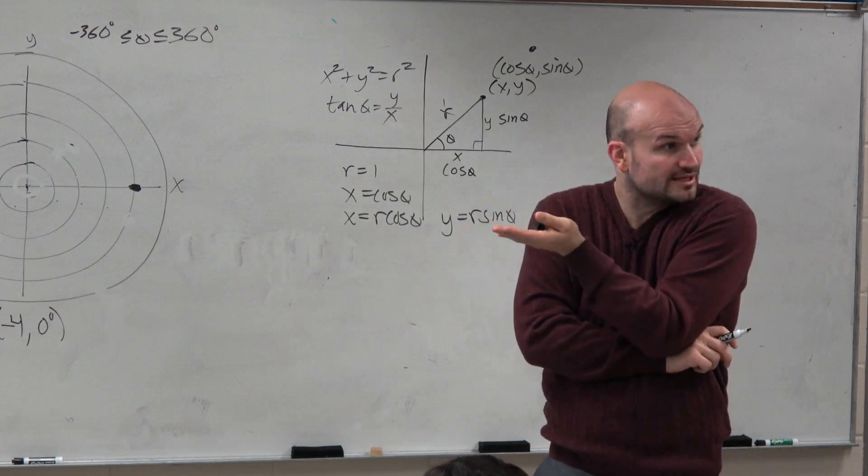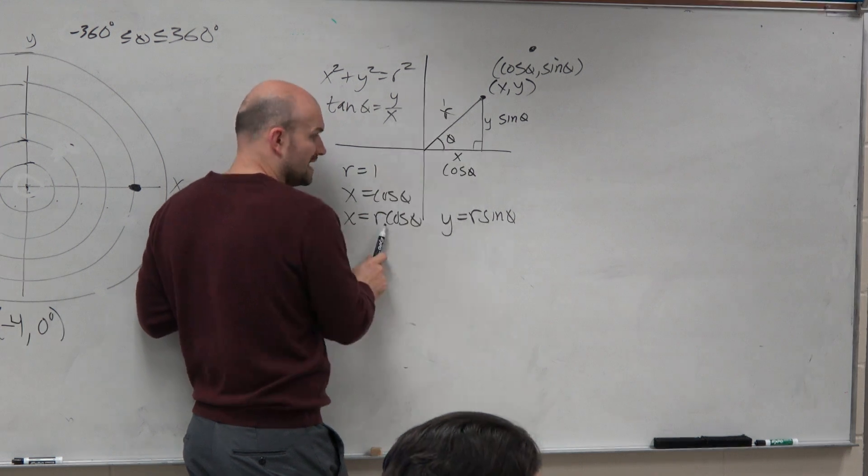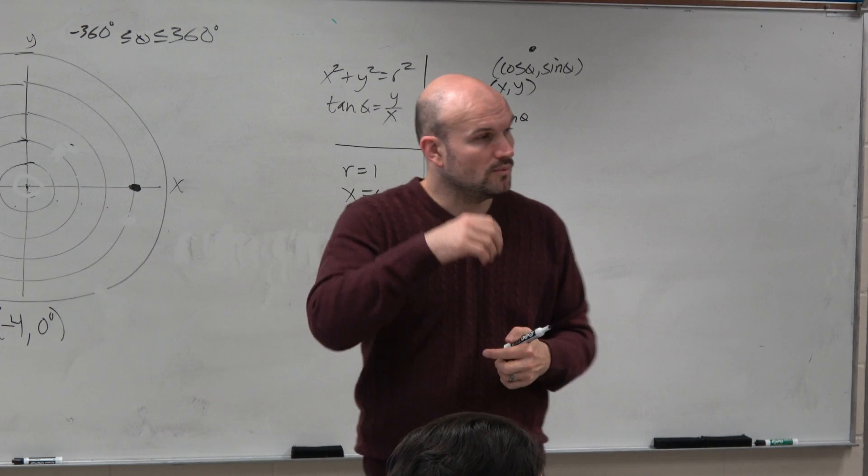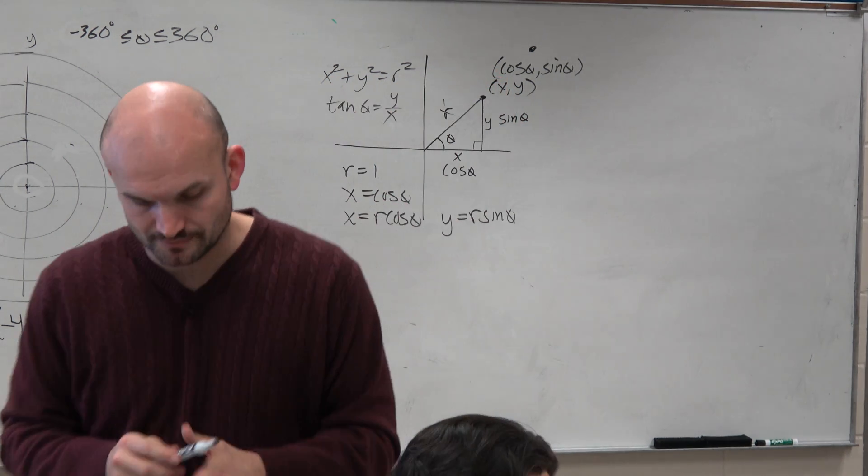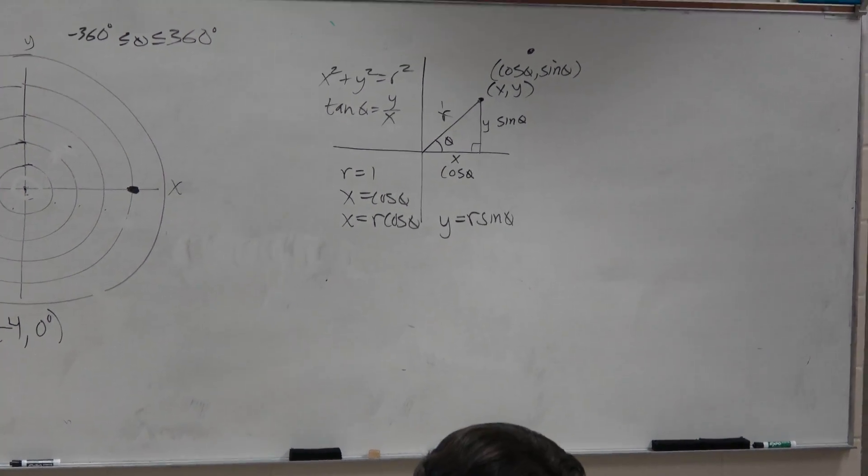Everything up there, pretty much the only thing new that I'm saying is when we don't have r equal to 1, you just got to make sure you multiply that by cosine of θ. Yes? So that's where all those formulas come from. And you're not going to be provided those formulas. OK?